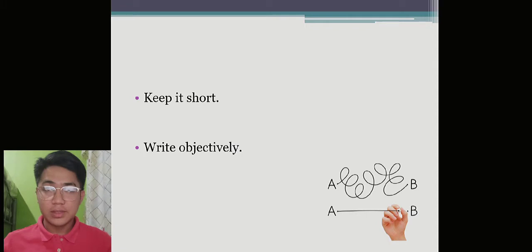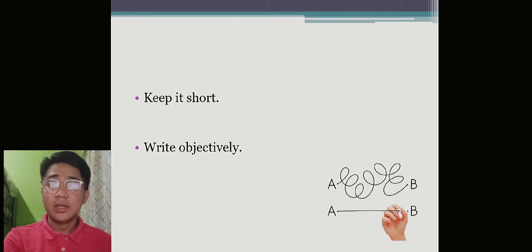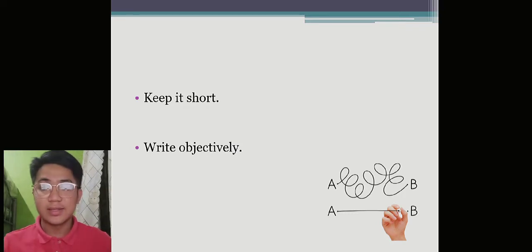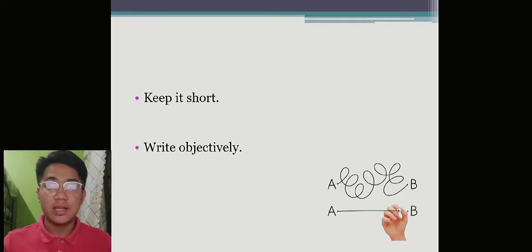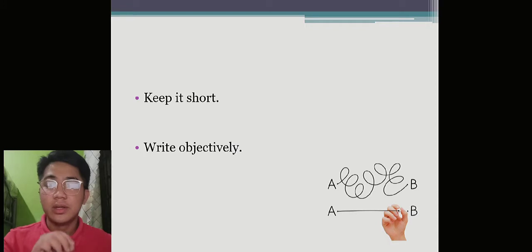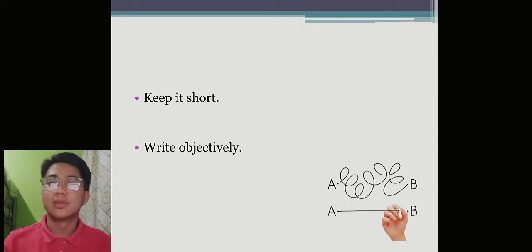Write the summary objectively. It is very important to write a summary objectively because you need to be accurate. It reflects the author's style and message — the main idea or the essence of the writing. If you're not writing it objectively, you're going to commit more mistakes; you're not doing a summary, you're inserting your own opinions.